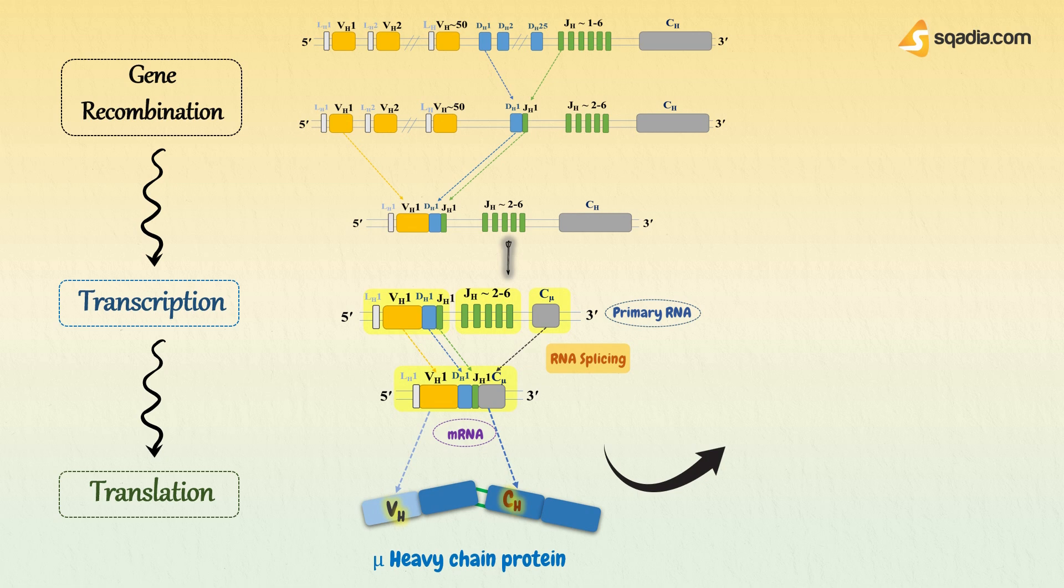The variable region recombination now produces variable region domain. While, after following combinations in constant region, it now produces a constant region domain. In this way, it gives rise to two heavy chains with both variable and constant regions.